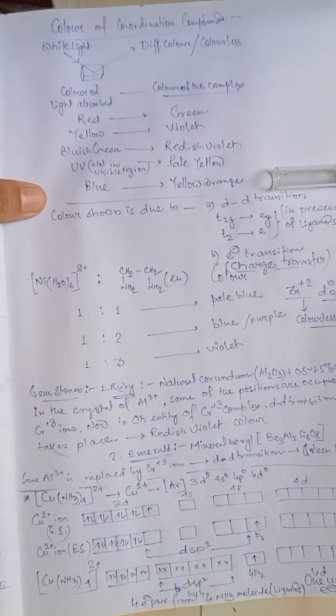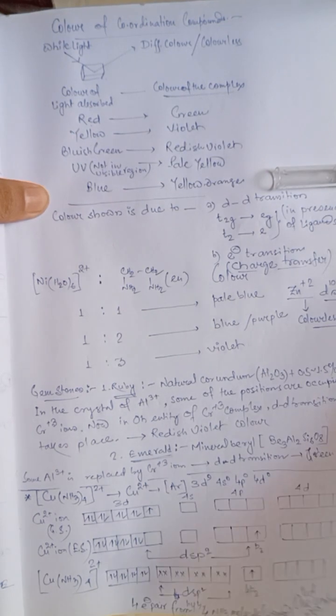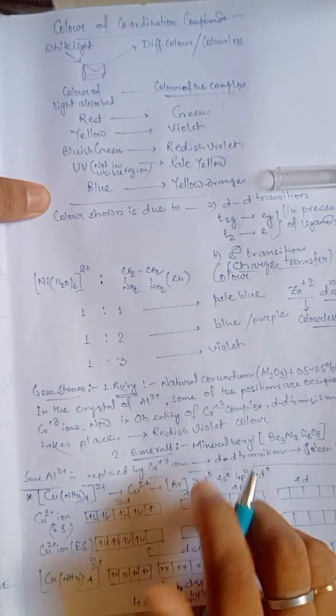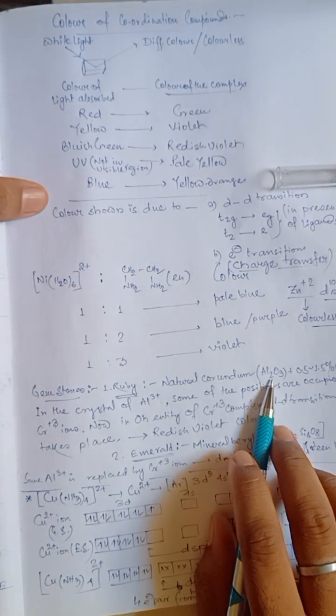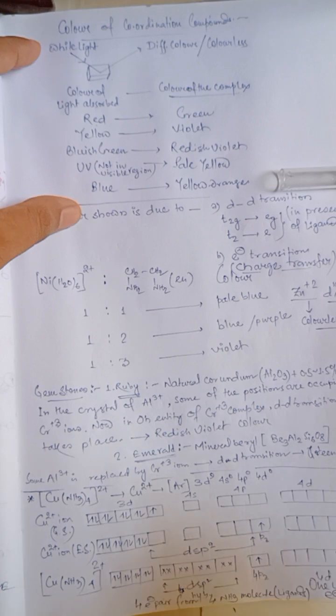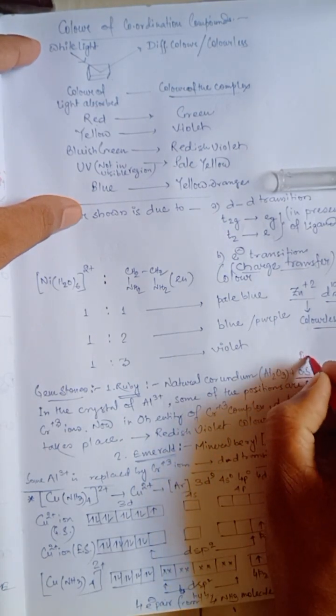Now, in practical field, we know two types of gemstones. One is ruby and another is emerald. In ruby, it is a particular natural corundum, that is Al2O3, mixed with some impurities. Chromium 3 plus remains as impurity in the corundum.